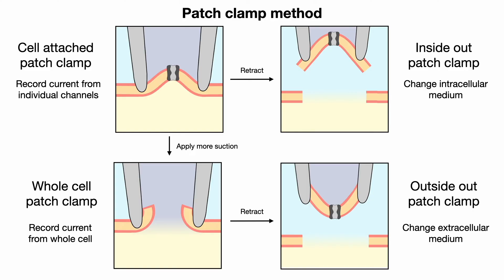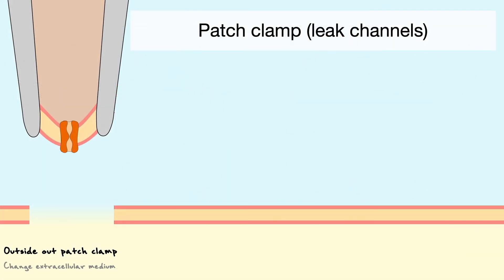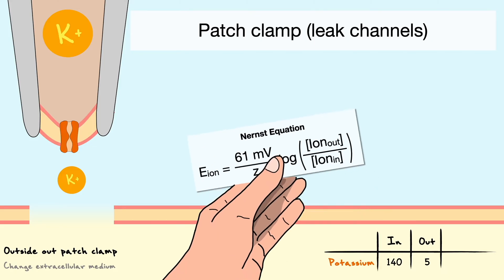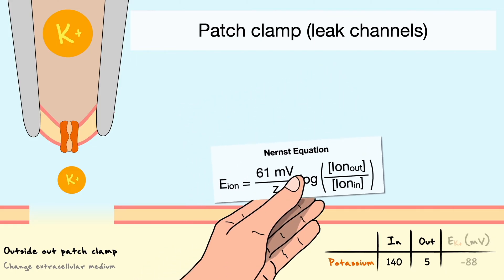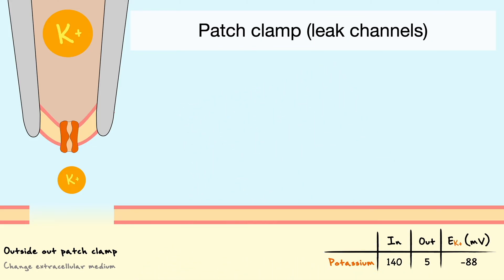To see how this technique works, let's first do an example of an outside-out recording on the leak potassium channel to see what results we can draw from it. In our system, imagine that the concentration of potassium inside the pipette is 140 millimolar and the outside is 5 millimolar. With these values, which closely resemble what happens physiologically, we can compute the equilibrium potential for potassium through the Nernst equation, which gives us a value of negative 88 millivolts.